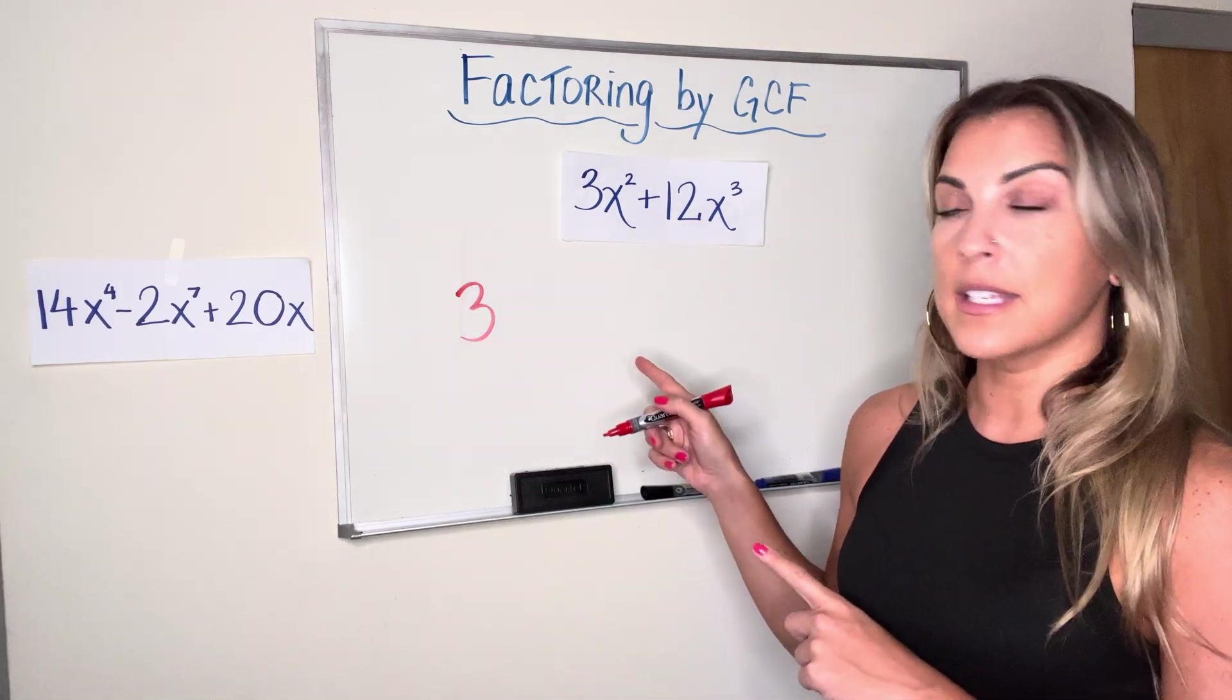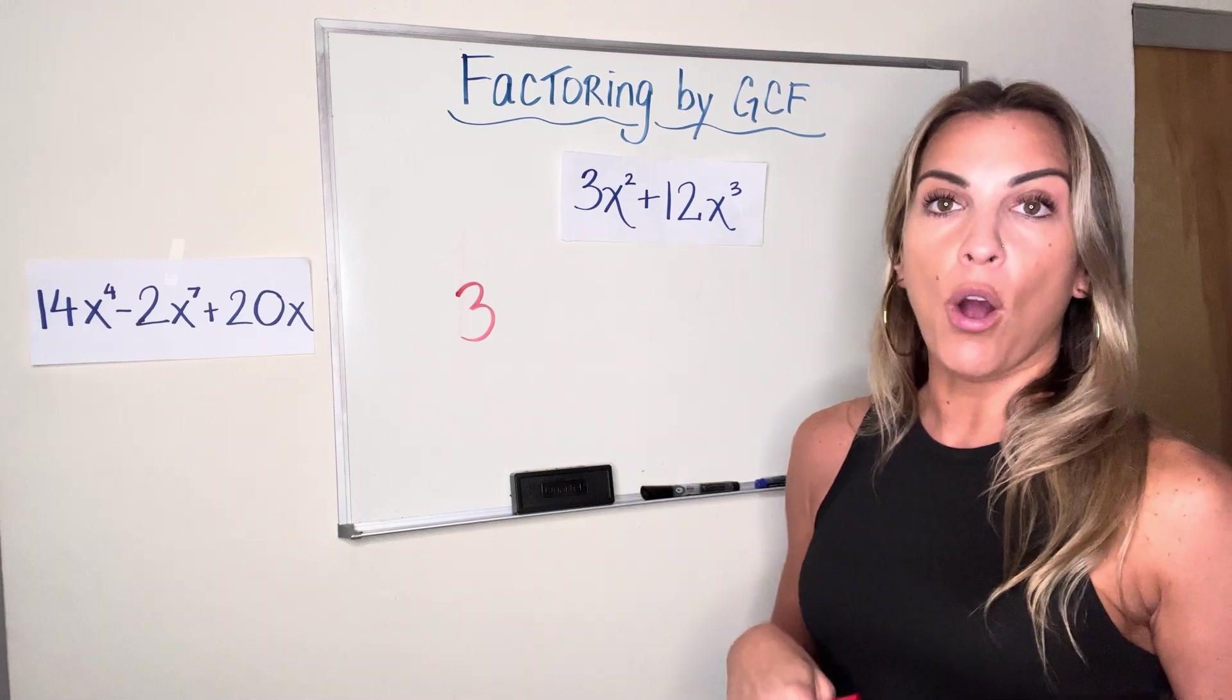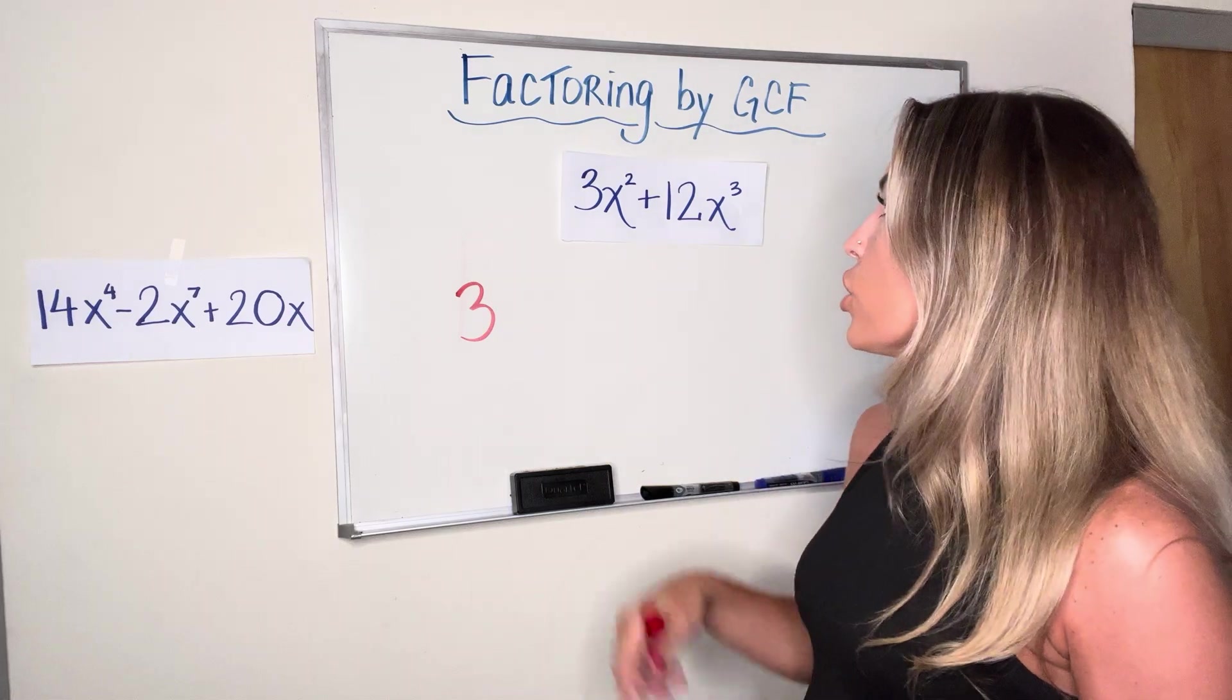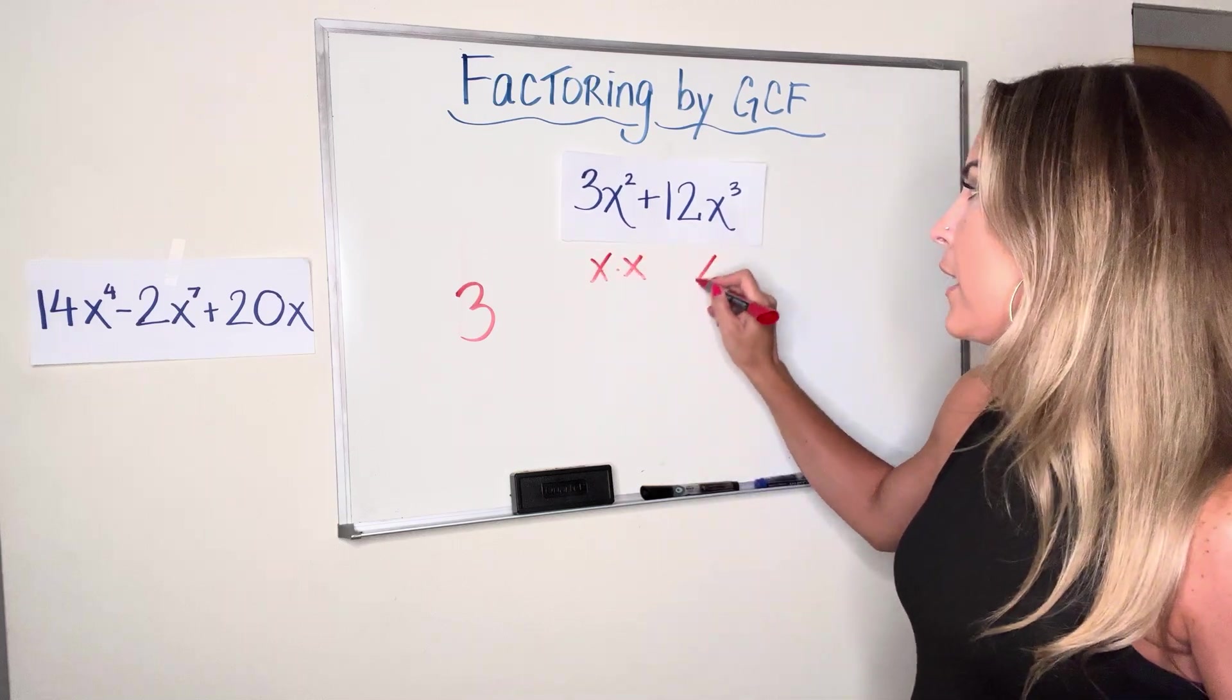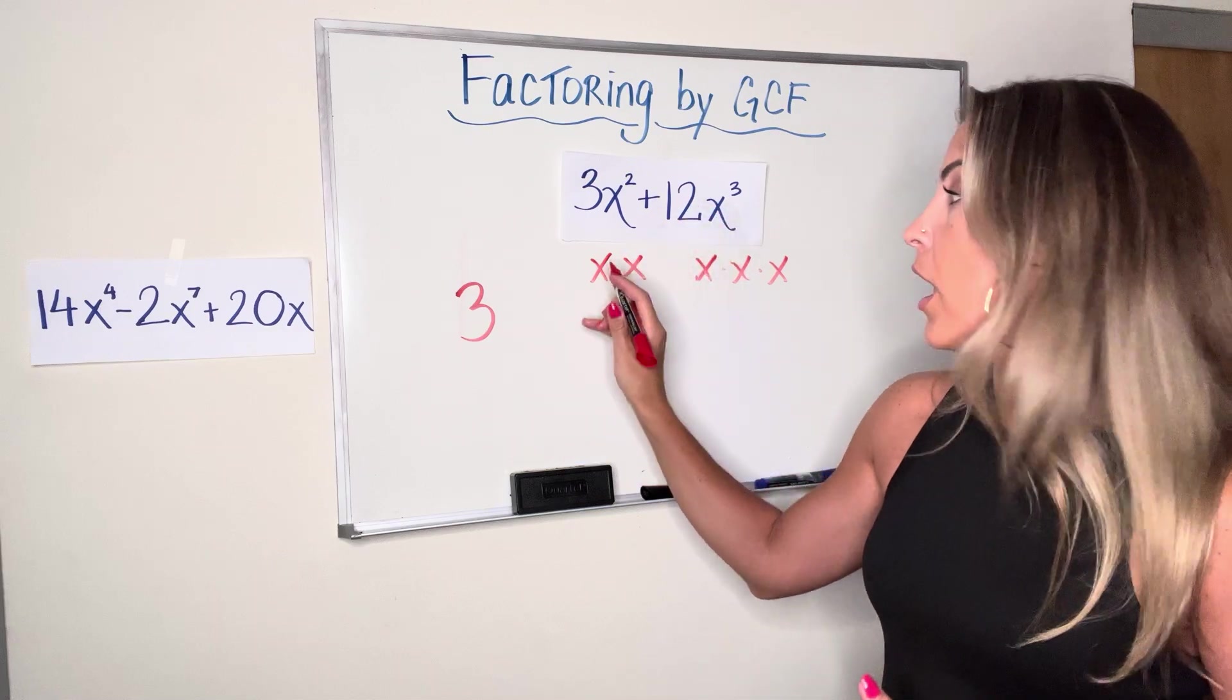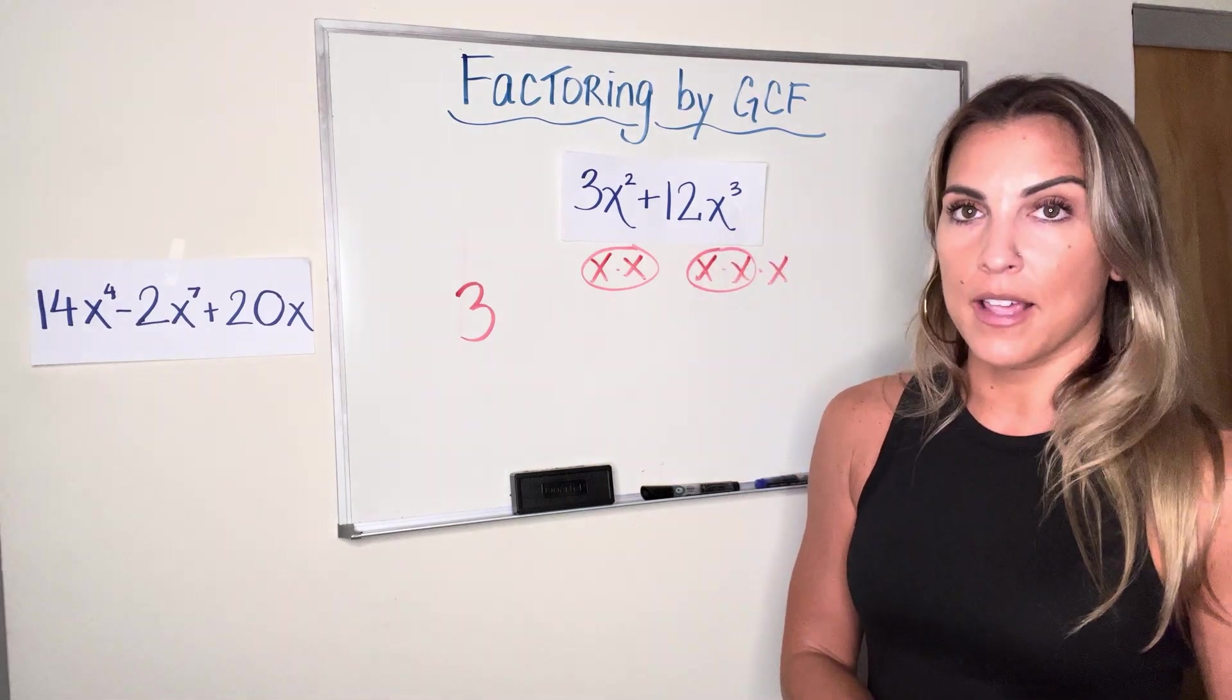So 3 is part of my GCF. What I noticed in this example is that both terms this time contain an X. So because they both contain an X, that means that the variable can be part of the greatest common factor. The question is just how many X's am I going to take out to be part of the greatest common factor? So x² means x times x. x³ means x times x times x. So what is the greatest amount of X's that I can take out as factors that both terms have in common?